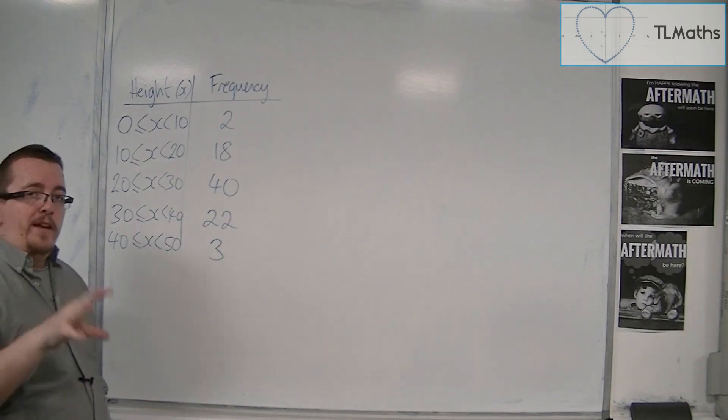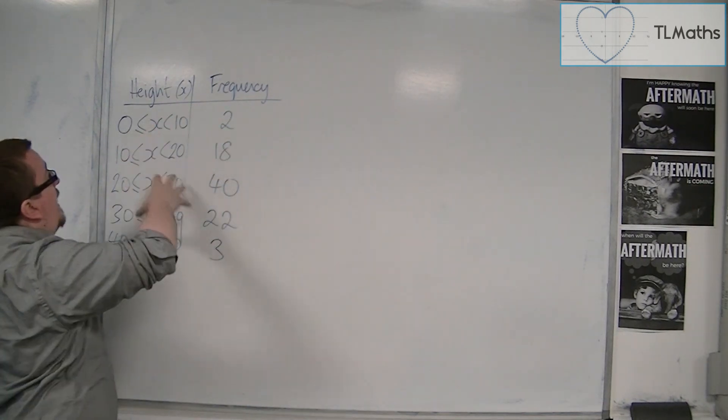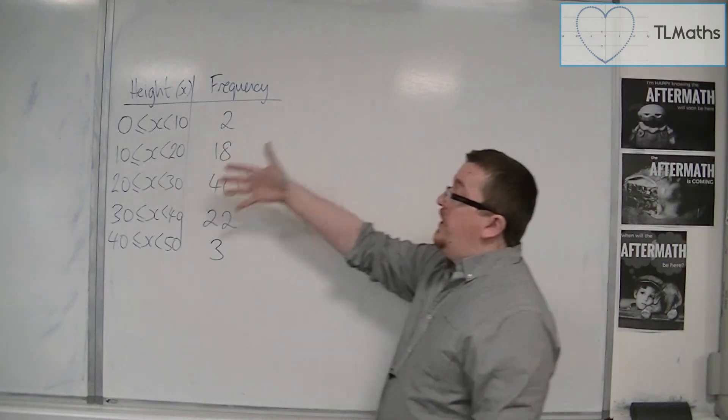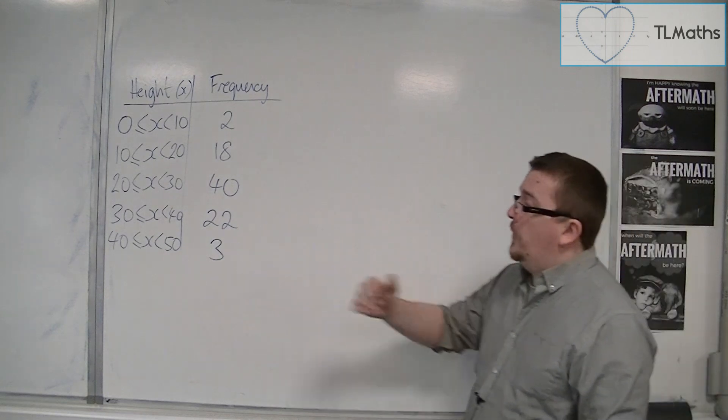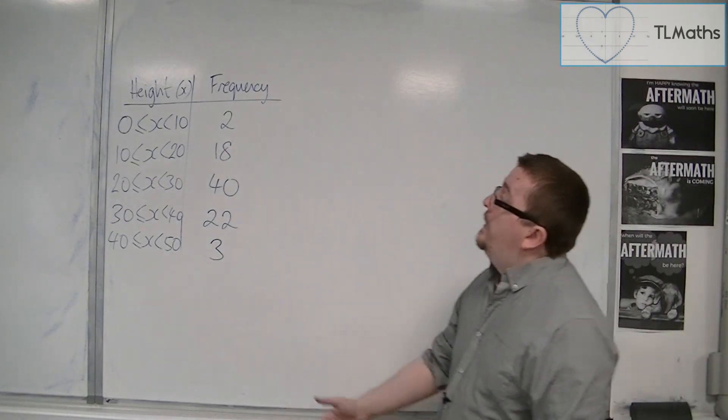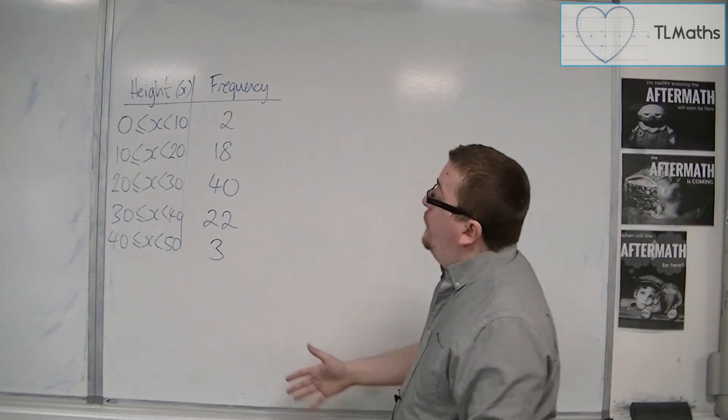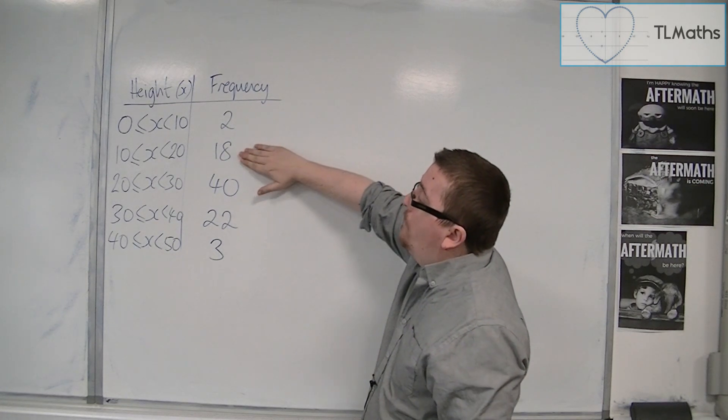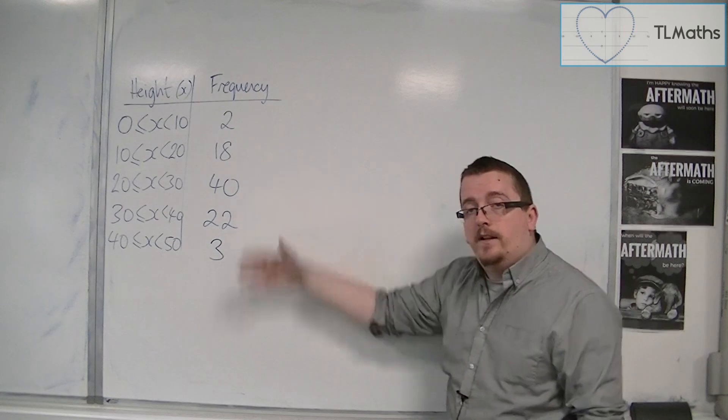When you met this at GCSE, you would have had a similar kind of table to this. You would have had some continuous data, so in this case heights, and here are frequencies. This is how many I have between 0 and 10, this is how many I have between 10 and 20, and so on.